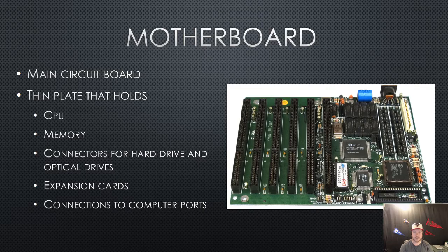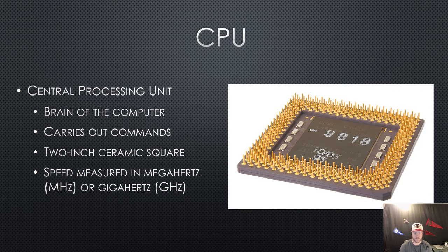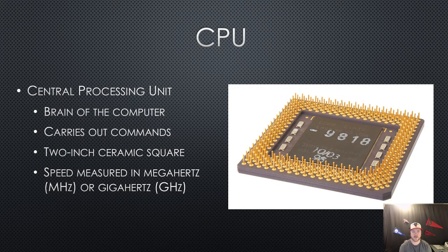The first thing I want to talk about is the CPU, the central processing unit. Anytime you buy a computer it'll say processor, and it'll be talking about this CPU chip right here. It's only a two-inch ceramic square and it connects right into the motherboard. This is known as the brain of the computer, and it carries out commands in either millions or billions of instructions per second. This speed is measured in megahertz for millions, so when buying a computer you're going to want to look at the processor speed to see how fast your computer is going to go.